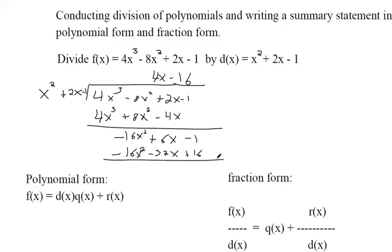And then we're subtracting these lines. So negative 16x squared minus a negative 16x squared, that cancels out. And then 6x minus a negative 32, that's 6x plus 32. So that makes 38x. And then negative 1 subtracted by 16, we're going further back in the negative. So that's negative 17 here.